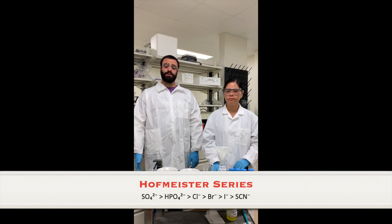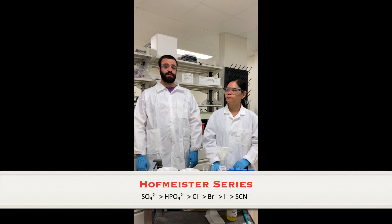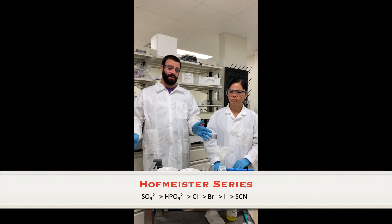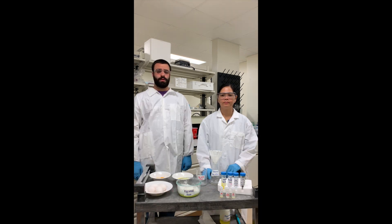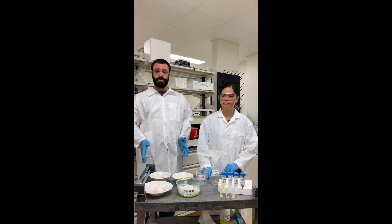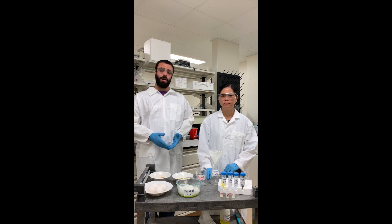Today we're going to tell you about something called the Hofmeister series. It's a ranking of ions based on their ability to precipitate proteins from aqueous solution. Ions on the left-hand side of the series are much better at salting out proteins than ions on the right-hand side. The Hofmeister series is relevant in many aspects of life and chemistry, from food chemistry and how pickles are made, to atmospheric chemistry, and even neurodegenerative diseases such as Parkinson's disease and Alzheimer's disease, all of which involve the misfolding of proteins in an aqueous solution.